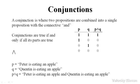As you can see, the proposition P and Q is only true if the proposition P is true and the proposition Q is true. Any other combination and the proposition P and Q is false.